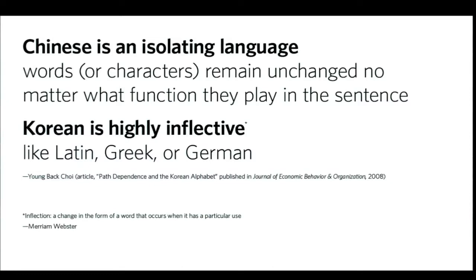Another issue is that the Chinese and Korean spoken languages are very different — the difference between Korean and Chinese is no less than that between English and Chinese. Chinese is an isolating language, meaning that words or characters remain unchanged no matter what function they play in the sentence. But Korean is highly inflective, somewhat analogous to Latin, Greek, or German. The Korean language being so different from Chinese made writing and reading Korean in the Chinese system that much more difficult, resulting in literacy being limited to those who could afford the education.